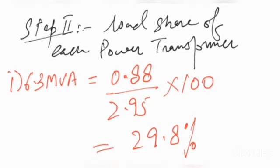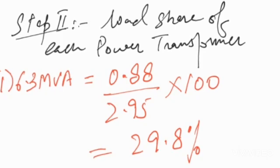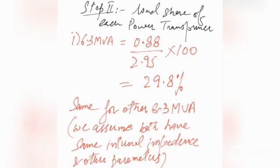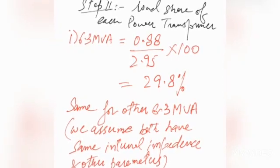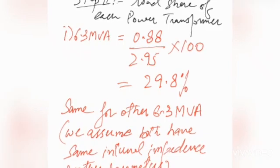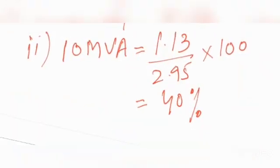Load share of each power transformer: for 6.3 MVA it will be 29.8%, and for a 10 MVA transformer it will be 40%. Let's assume another 6.3 MVA is of the same internal impedance and characteristics.